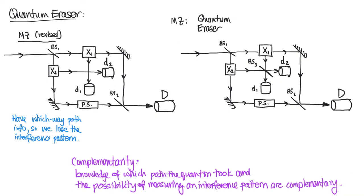So beam splitter 3 serves the purpose of scrambling which way path information or if you like the word eraser here is that beam splitter 3 is erasing the which way path information that we used to have in this previous experiment. That's the eraser and by erasing that which way path information we should be able to recover the interference pattern. But perhaps surprisingly if you look at the counts in detector D as you vary the phase in the arm of the detector you do not get an interference pattern. So that's rather surprising.